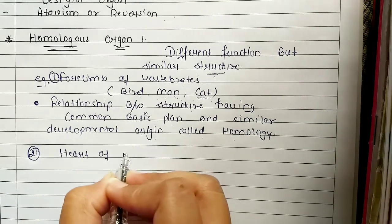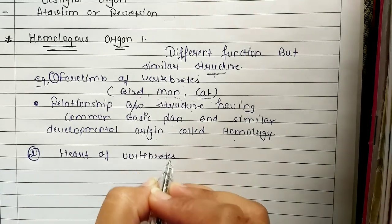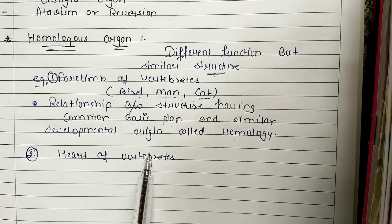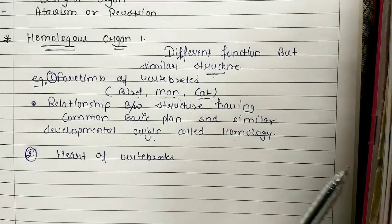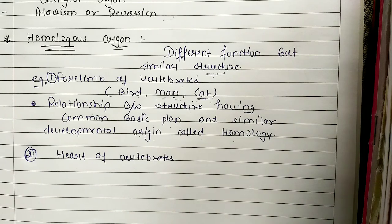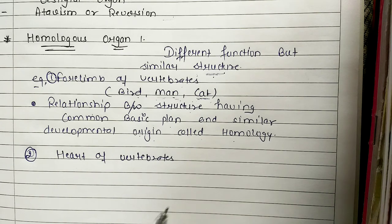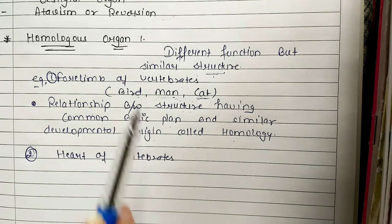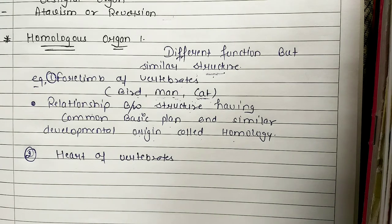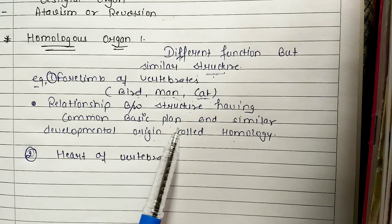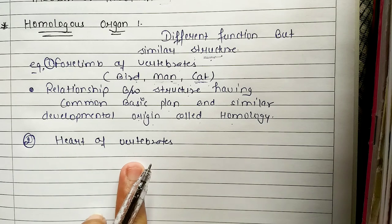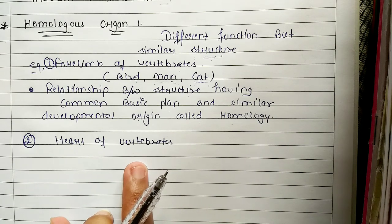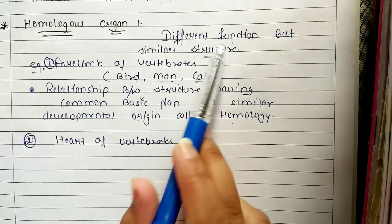Another example is the heart of vertebrates. You will understand this. We said homologous organs have different functions, but if we talk about the heart of vertebrates, the heart's main function is the same — pumping blood. However, it is still called homologous organs because it has the same basic plan and origin among vertebrates. The heart of vertebrates is homologous organs.